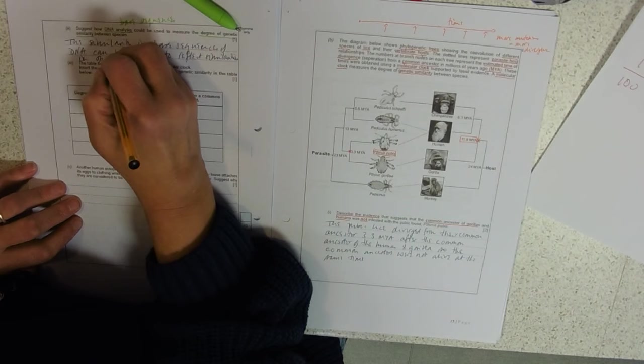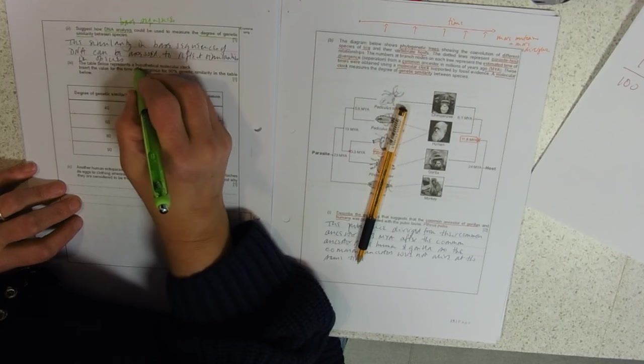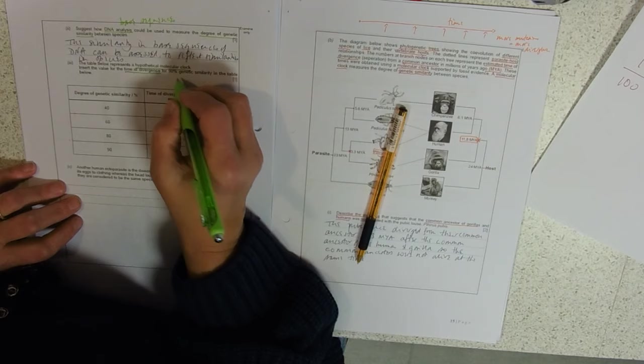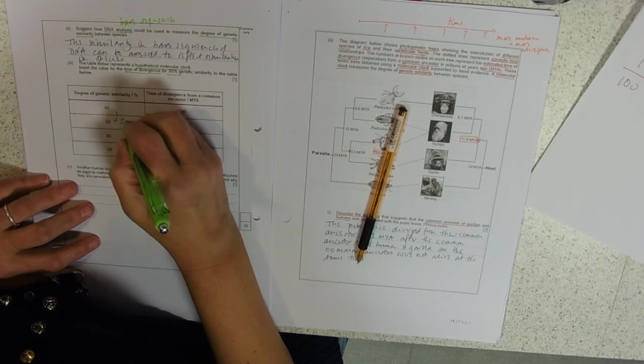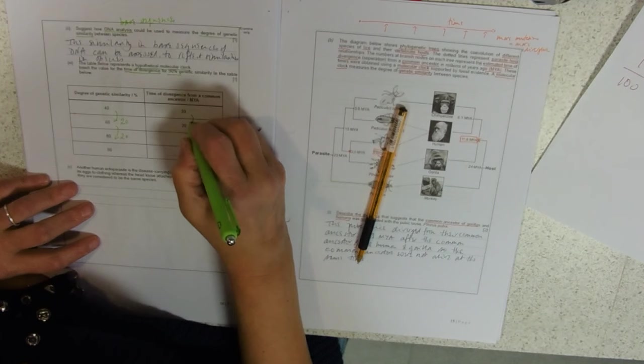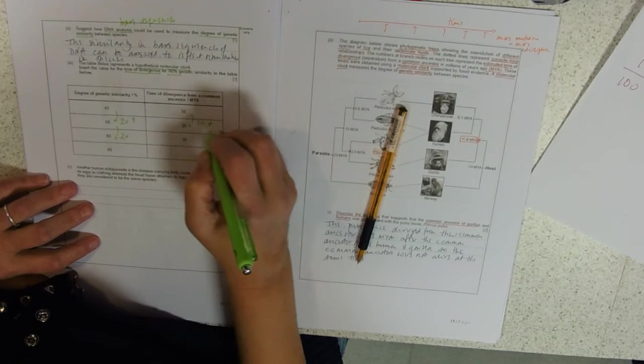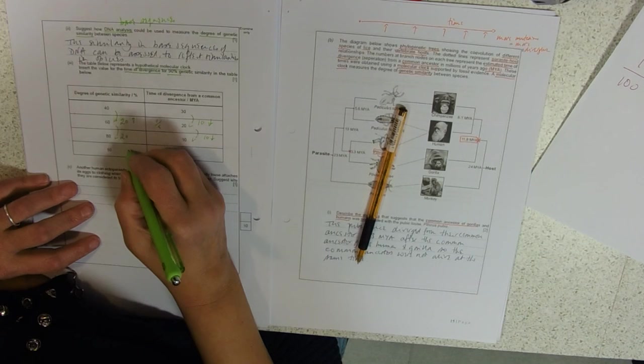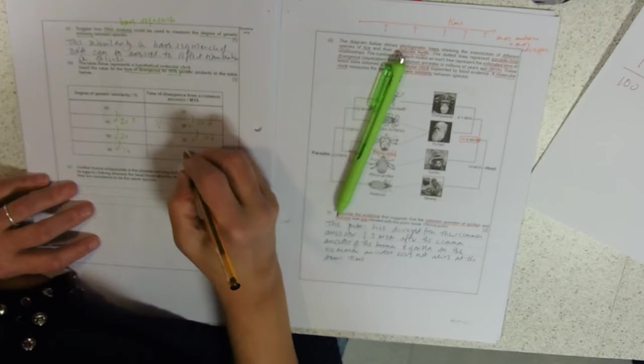Table with a hypothetical molecular clock, made up data. Insert the value for the time of divergence for 90% genetic similarity. So here, this is a pattern spotting thing which I have to say always wants to make me cry. We've got a 20% increase there, and a 20% increase there. We've got a 10% decrease. This is 20% up, 10% down, 20% up, 10% down, half. 10% up, half of 10, five.